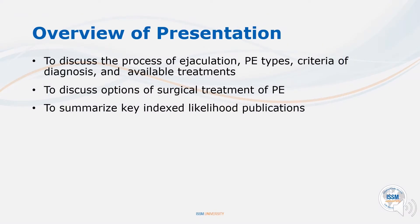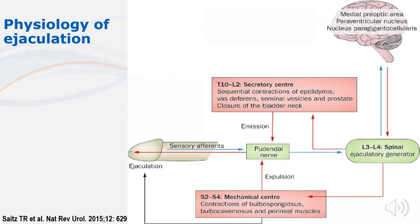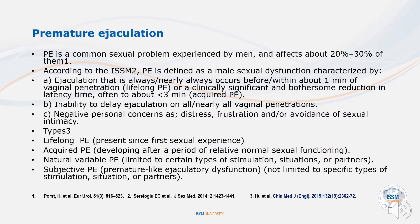This page summarizes the lecture overall and will be present below the video itself. Ejaculation is the result of a coordinated contractile activity involving different mechanisms. PE is a common sexual problem and affects about 20 to 30 percent of men.